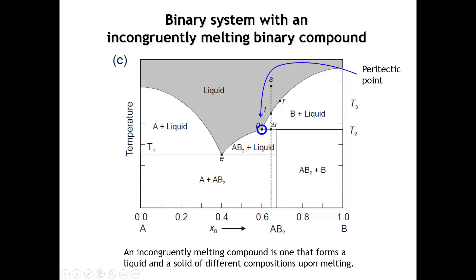If we were to follow this dashed line down, we're forming more and more crystals of B, and then when we pass point U, the solid that is in equilibrium with the liquid changes composition dramatically. Above U, the solid in equilibrium with the liquid is B; below U, the solid in equilibrium with the liquid is AB2. So it's very common when you have this kind of phase diagram and cool on this vertical line that you might not end up with an equilibrium mixture at room temperature. The reason is that if you don't cool very slowly through this region, there's not enough time or energy for B to transform into AB2.